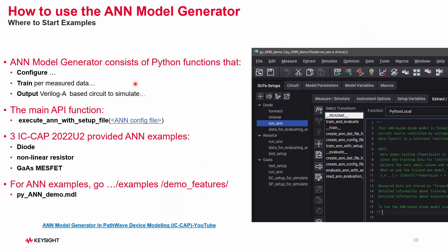How to use the ANN model generator will be shown in the next demonstration. Essentially, it consists of a Python library that configures the data, trains the ANN model per the measured data, and then outputs a standard Verilog-A file that you can simulate. The primary top-level function is 'execute ANN with setup file,' with many supporting functions underneath. IC-CAP 2022 Update 2 now offers three examples: the diode, a nonlinear resistor, and a GasFET.